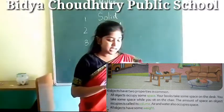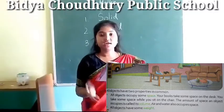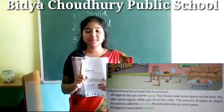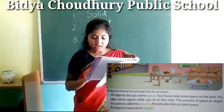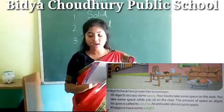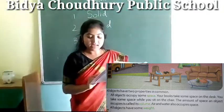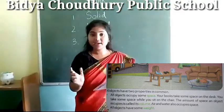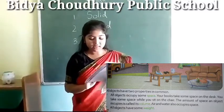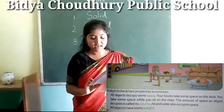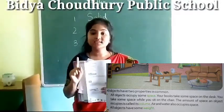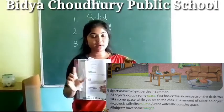You take some space while you sit on a chair — if you are sitting in a chair, you are occupying the space. The amount of space an object occupies is called its volume. Underline this sentence: the amount of space which is occupied by an object is known as the volume. Air and water also occupy space; though they are very light, all objects occupy space.